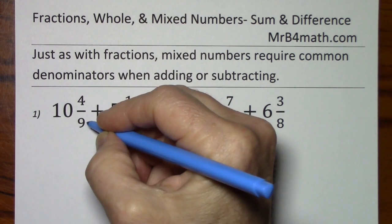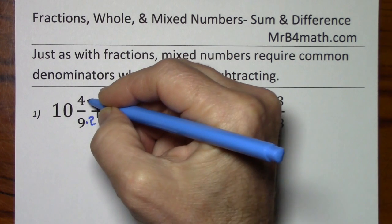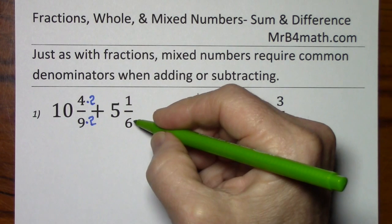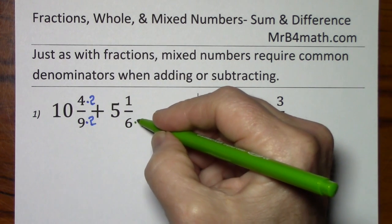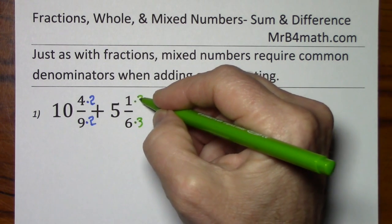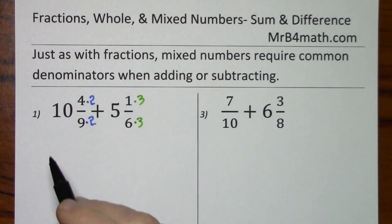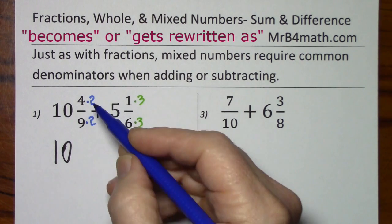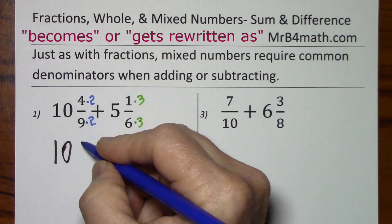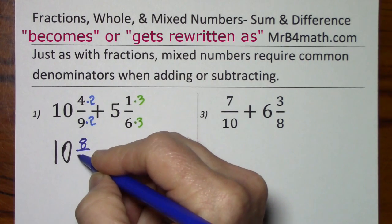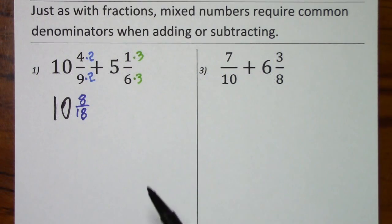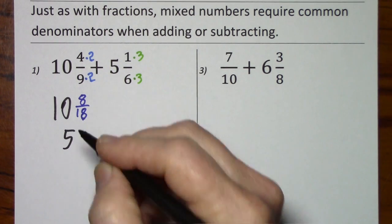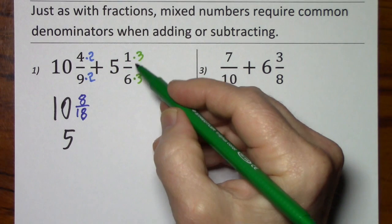To get from 9 to 18, you multiply by 2. To keep it balanced, you always have to do the same thing to the numerator. To get from 6 to 18, you multiply by 3, same to the numerator. So, 10 and 4 ninths becomes 10 and 8 eighteenths. 5 and 1 sixths becomes 5 and 3 eighteenths.